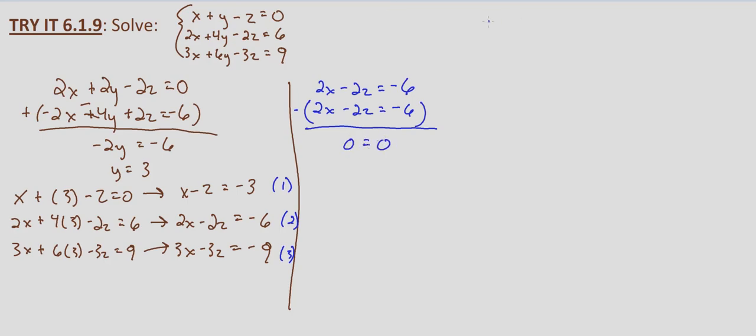Now what that means is that there are infinitely many solutions. Now that said, it doesn't mean that all three variables can be whatever we want. Because if I put in 100, 200, and 100 for x, y, and z respectively, that doesn't equal zero.